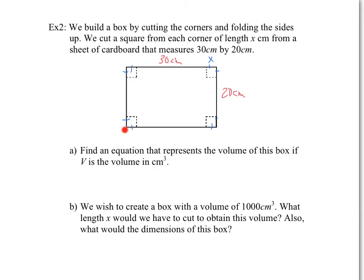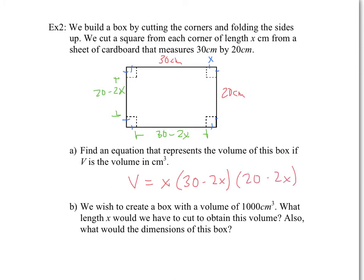Looking at the three dimensions: this side was normally 30 cm, but we took off X on both ends, so the new length is 30 − 2X. Similarly, the other side was 20 cm, and we took off X from each end, giving 20 − 2X. Once the sides are folded up, the height of the box is X. So the volume equals X times (30 − 2X) times (20 − 2X).